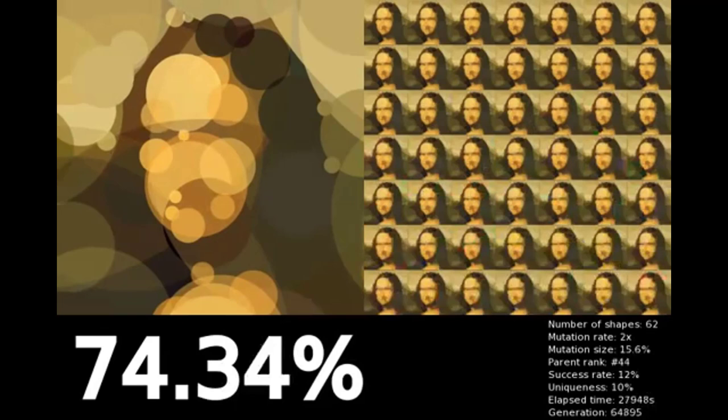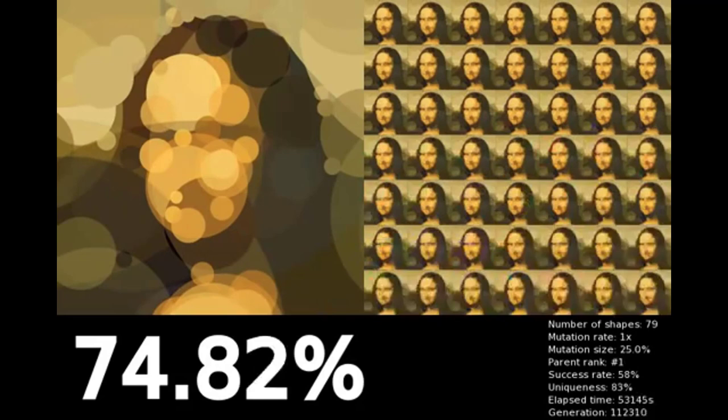If you remember, we also let not-so-strong individuals produce offspring. Here it is. We got 75% with 100 shapes and 250,000 generations.